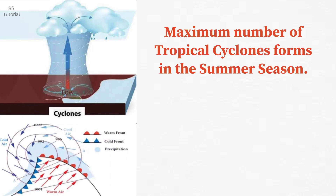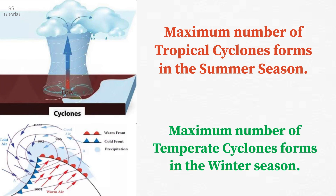Most of the tropical cyclones form in the summer season. But most of the temperate cyclones form in the winter season, and a small percentage of temperate cyclones form in the summer season.